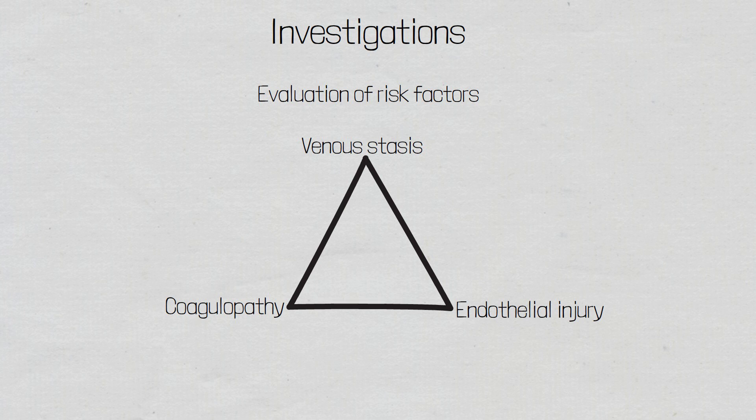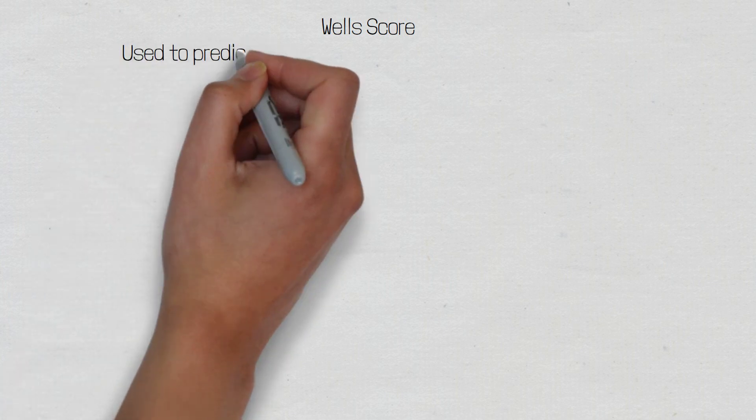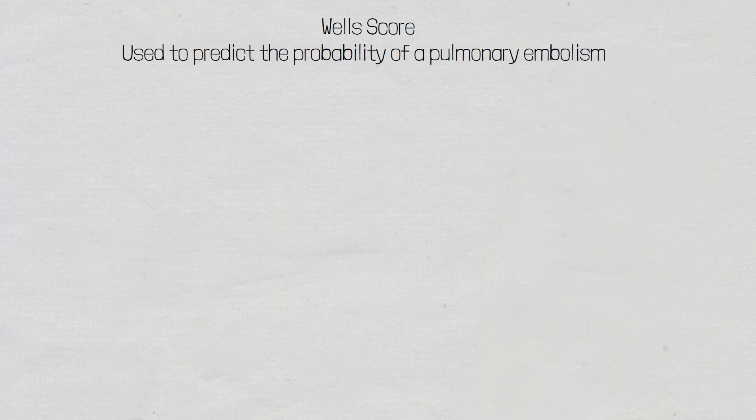To assist in the evaluation of these difficult presentations, clinical decision tools are utilized such as the Wells score, which can help guide the sequence of diagnostic investigations based on a patient's risk of having a pulmonary embolism. The Wells score is used to predict the probability that an individual is suffering from a pulmonary embolism, but it's not a diagnostic tool. It therefore helps guide clinical decisions about what further investigations are required.